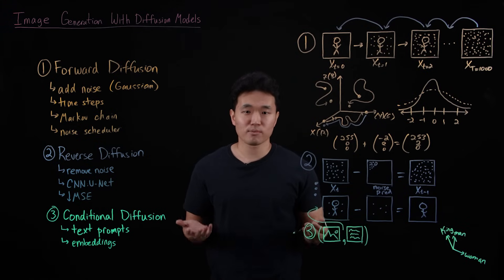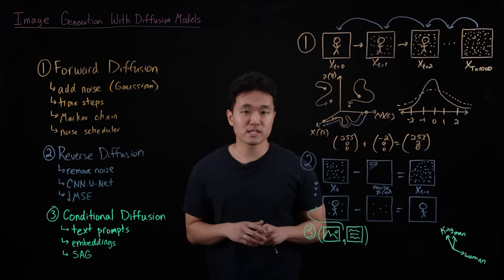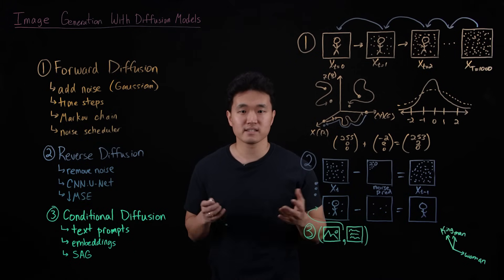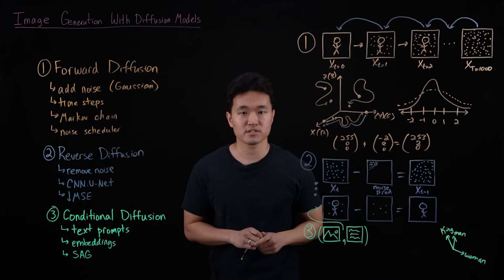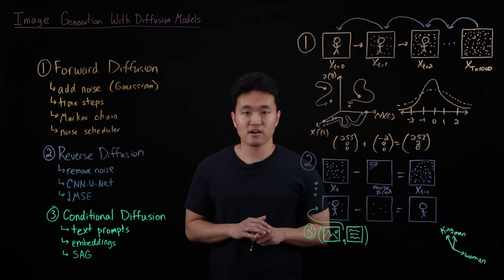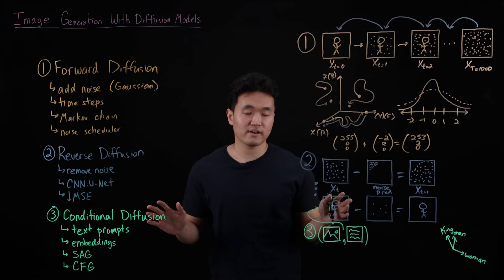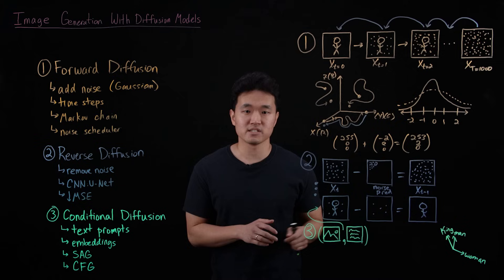One method for incorporating these embeddings is what's called self-attention guidance, which basically forces the model to pay attention to how specific portions of the prompt influence the generation of certain regions or areas of the image. Another method is called classifier free guidance. Think of this method as helping to amplify the effect that certain words in the prompt have on how the image is generated.